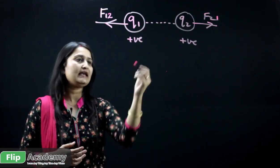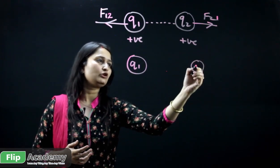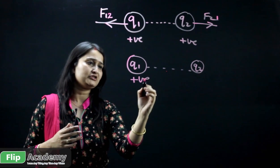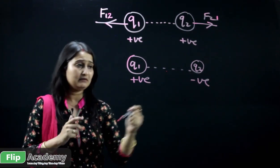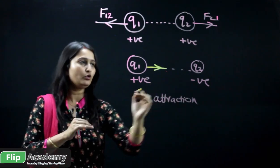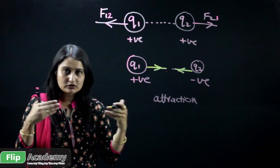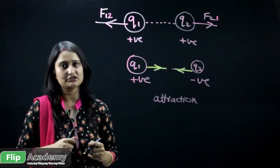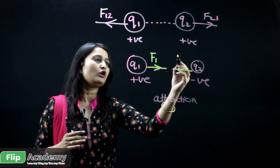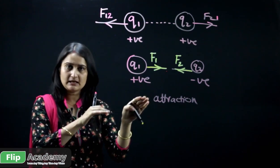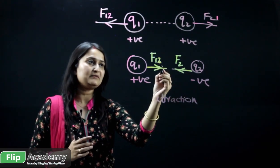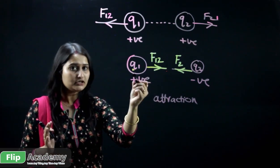Now if I change the charges — let's say Q1 is positive and Q2 is negative — then there must be a force of attraction. This force of attraction is pulling Q1 toward Q2 and pulling Q2 toward Q1. Both are coming close together because they are attracted toward each other. The force on Q1 by Q2 can be represented as F12.